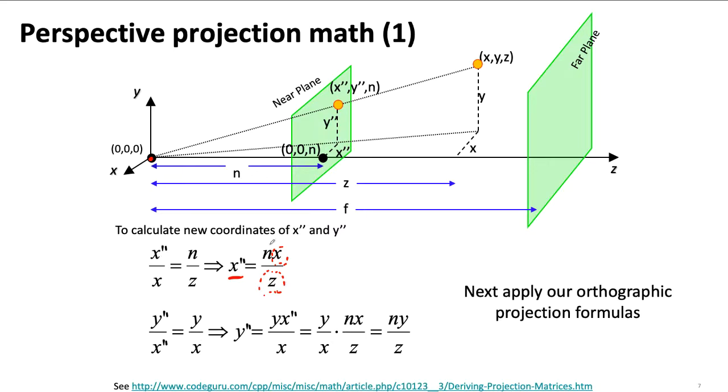Now, the similar triangles we're making have to work in all of the coordinates. So, for instance, the ratio of Y double prime to X double prime should match the ratio of Y to X. And so I can manipulate that to get a similar expression as what I have up here.